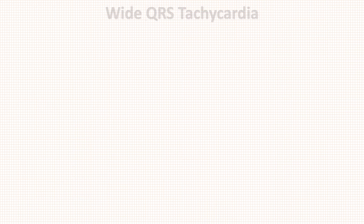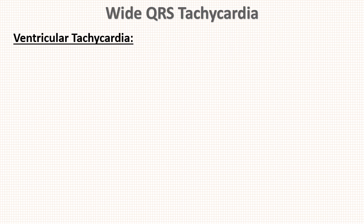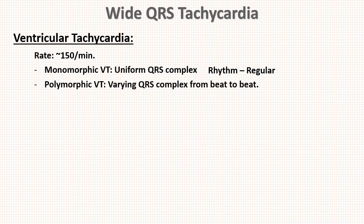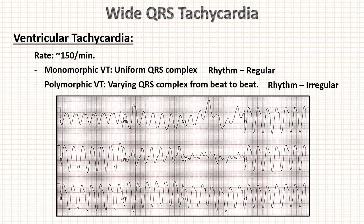Now let us discuss wide QRS complex tachycardia. First is ventricular tachycardia, where rate is around 150 beats per minute. It has two types: first is monomorphic VT, where uniform QRS complexes are present with regular rhythm; second is polymorphic VT, where QRS complexes vary beat to beat and rhythm is irregular. Have a look at this ECG — looking at all leads individually, this is monomorphic VT.